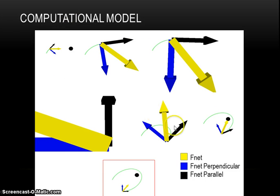Here is what my computational model looked like. The yellow arrow represents the net force and always points towards the black hole. The black arrow is the parallel component of the net force, and the blue arrow represents the perpendicular component of the net force. The arrow sizes change according to the distance they are at. The star did not make a complete orbit in this given time interval, but eventually it will complete the motion.